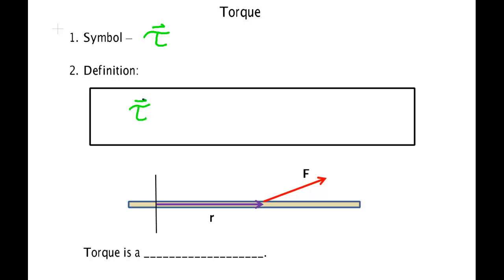The definition of torque is: the torque is created when a force is applied to an object at some distance from an axis of its rotation, and its definition is the cross product of two vectors, the vector r crossed with the vector F.